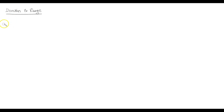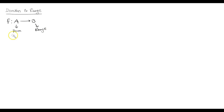Hello, let's talk about domain and range of a function. Suppose a function f is defined from a set A to B. Then this first set is known as the domain and the second set is known as the range. By domain we mean it contains all the values x that the function can take, and range contains all the values y which is the result as we plug in x into f.